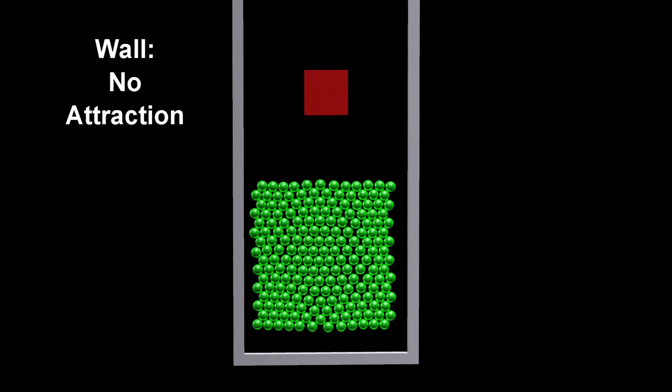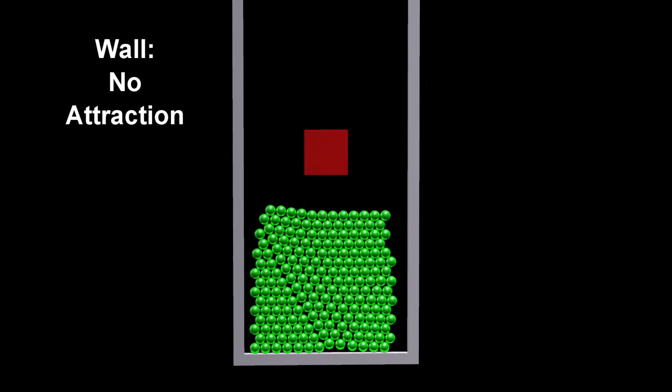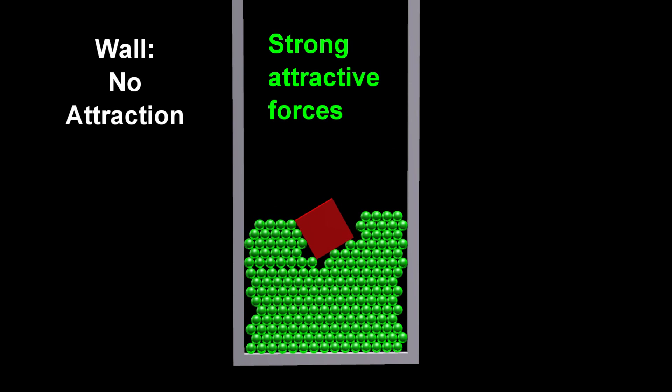When the red box falls on the green balls, which exert a strong attractive force on each other, this is the result.